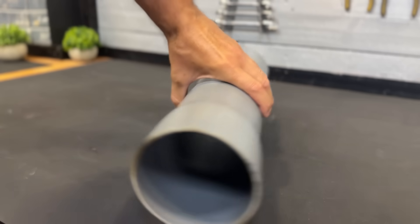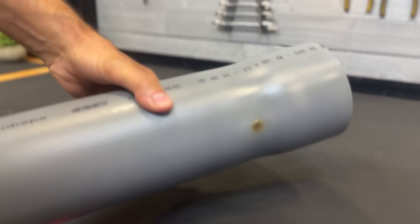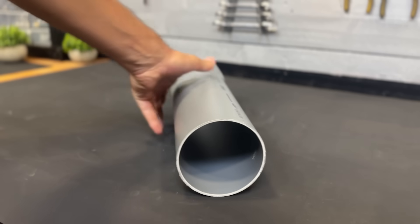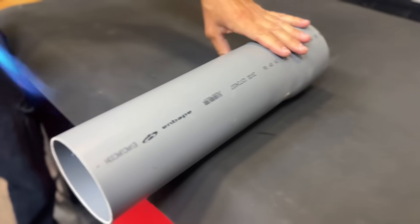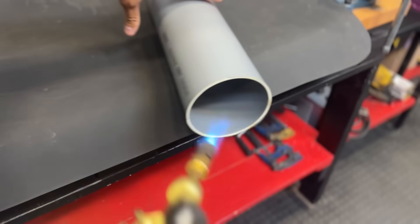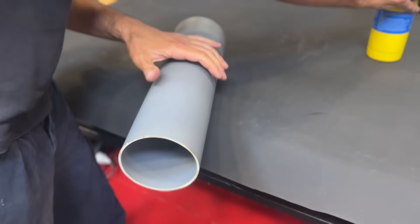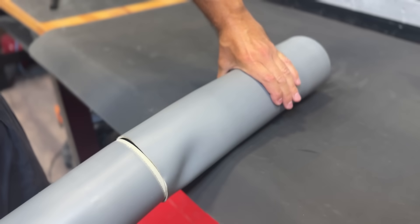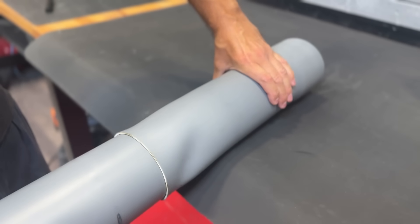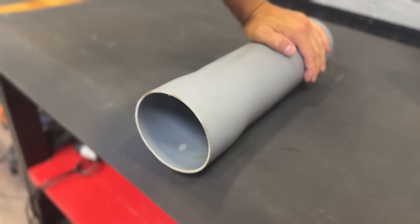Once it has cooled and hardened, we can remove the other tube. We repeat the process on the other side of the same tube. We have already expanded it at both ends.